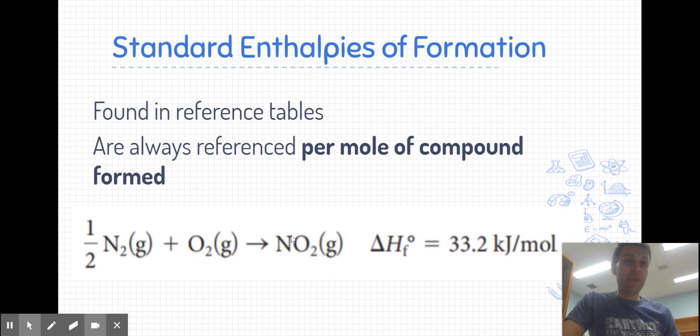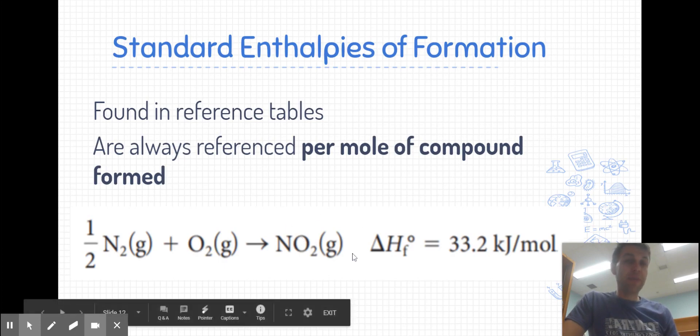Nitrogen dioxide consists of nitrogen atoms and oxygen atoms. So to write the equation for its enthalpy of formation, we just split those up, so nitrogen and oxygen.